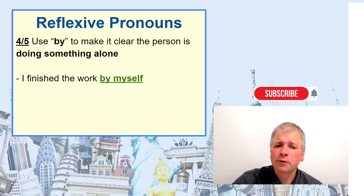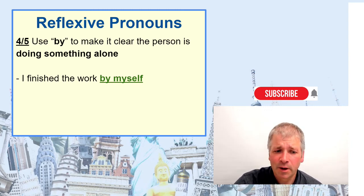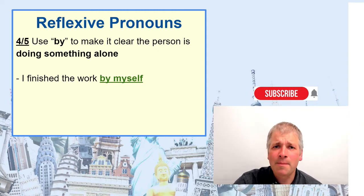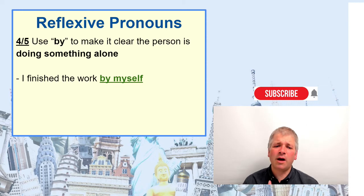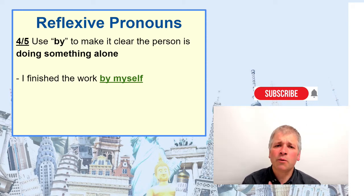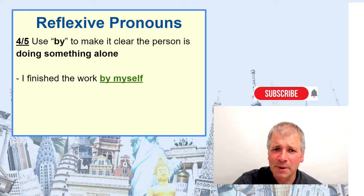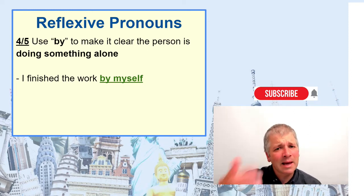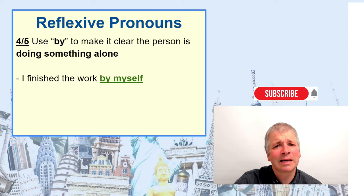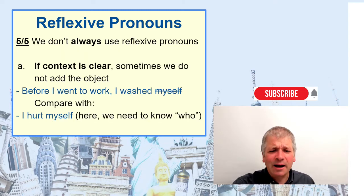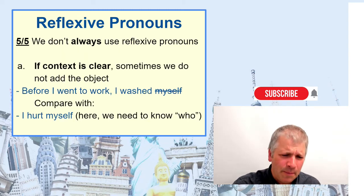Fourthly, sometimes we add 'by' before the reflexive pronoun, and this is to make it clear the person is doing something alone. Look at the example: 'I finished the work by myself.' That means I was alone in doing it — I was the only one and no one else helped me. So 'by' can make that meaning clear.